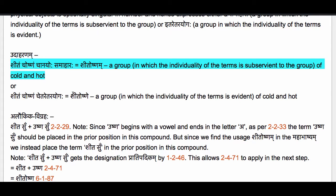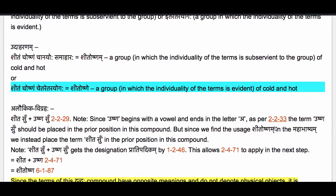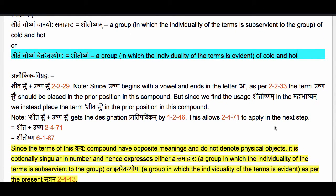When it expresses a Samaharaha, the individuality of the terms is subservient to the group. Or we could optionally have Sheetancha Oshnancha Itare Tarayogaha — Sheetoshne — a group of cold and hot, but this is the group in which the individuality of the terms is evident. This expresses an Itare Tarayogaha.